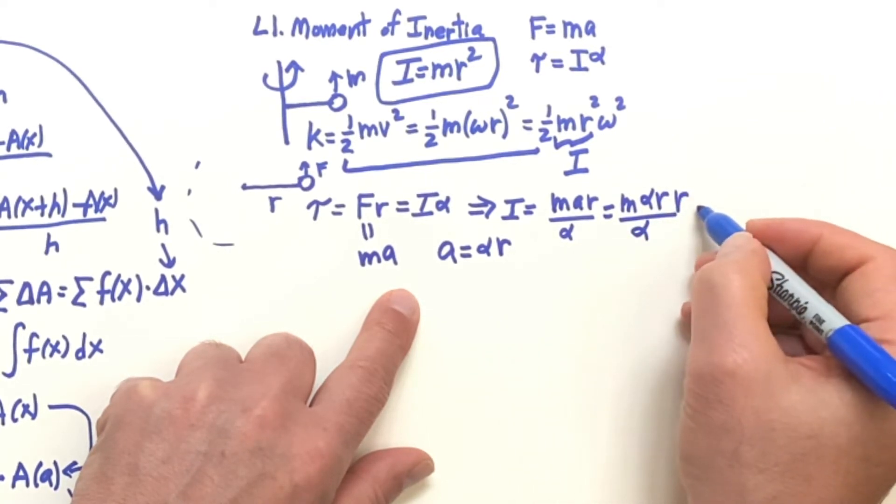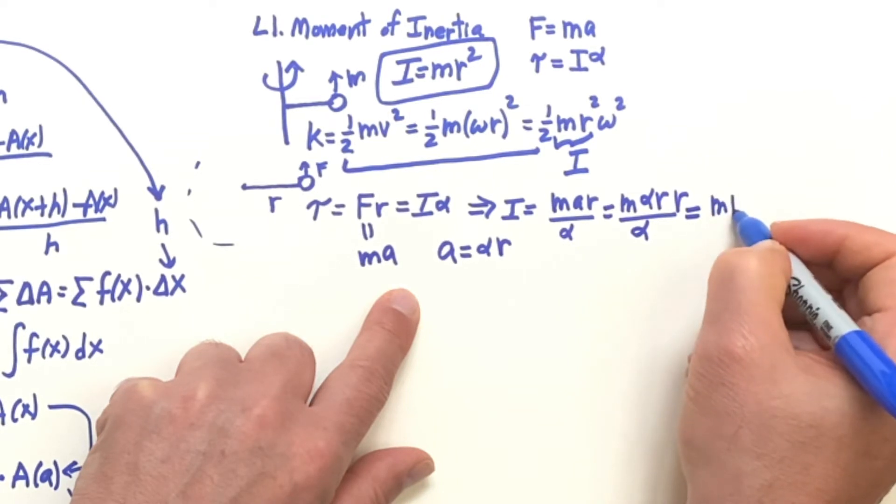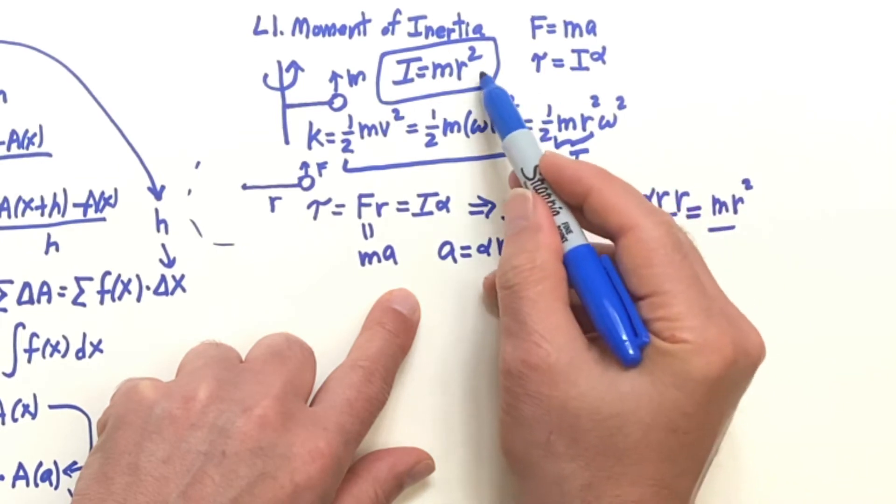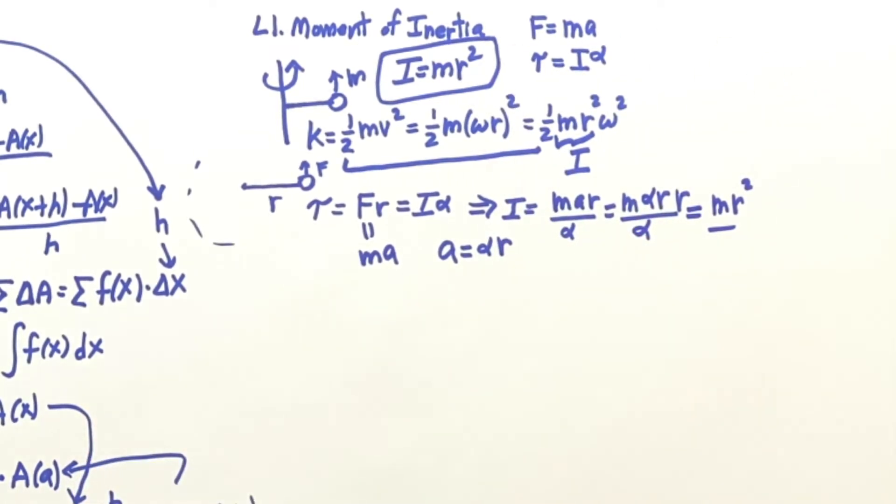The alphas cancel, and you get M R squared. You get the same result that we had before. So I just wanted to show you that, the beauty of physics, how it's related.